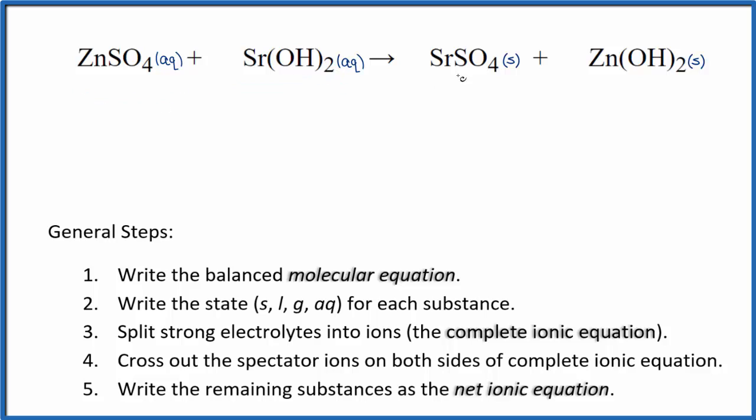These two substances react, this falls to the bottom of the test tube as a precipitate. So we call that a solid. Zinc hydroxide also is very poorly soluble, so it's going to be a solid as well. So it's not often we have both of the substances being a precipitate. But in this case, that's what happens.